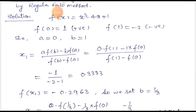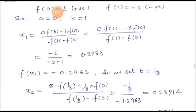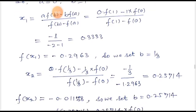Using x₁ = [A·f(B) - B·f(A)] / [f(B) - f(A)] and putting in the values of f(A) and f(B), we get x₁ = 0.3333. Putting x₁ = 0.3333 into the equation, f(x₁) = 0.2963, which is positive. So we set B = 1/3, and compute x₂. After solving, x₂ = 0.2571.